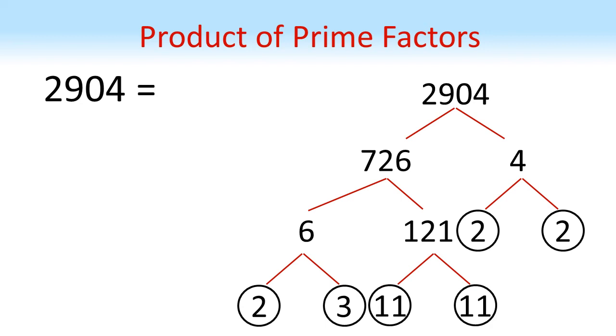So at the bottom of our factor tree, we've got 2, 3, 2 11s and another 2 2s. So 2,904 must be equal to 2 cubed times 3 times 11 squared.